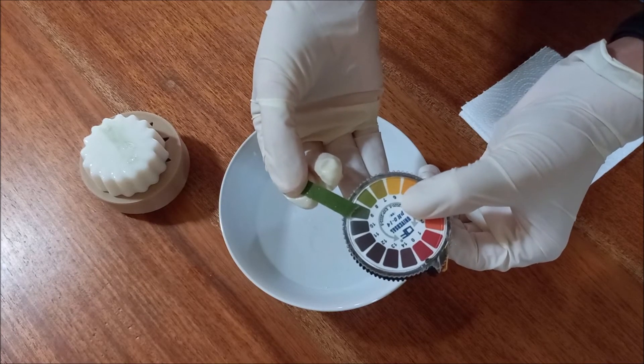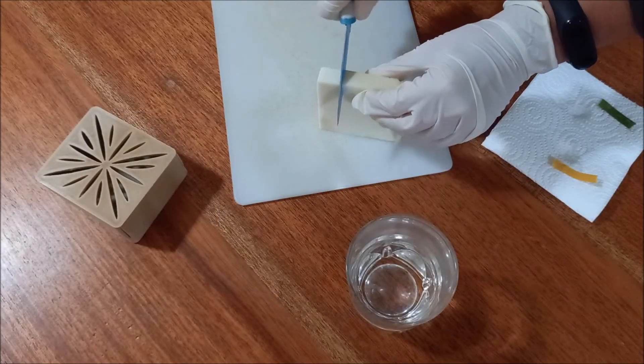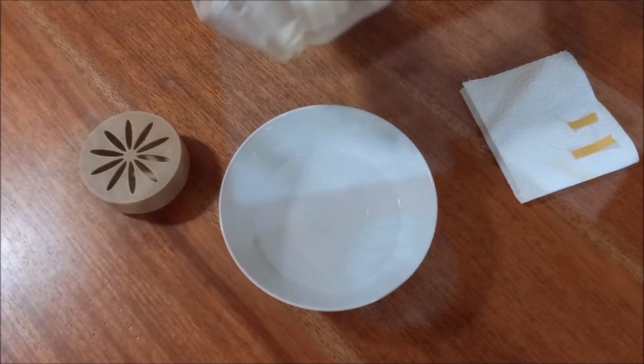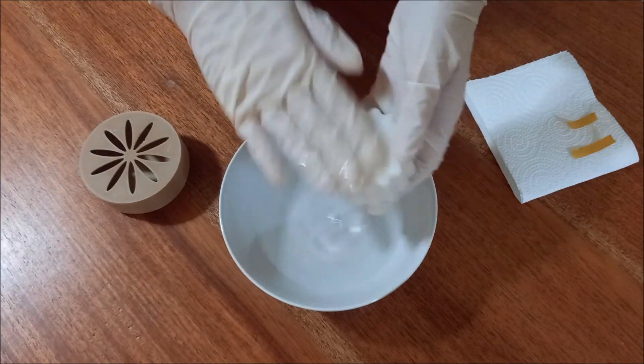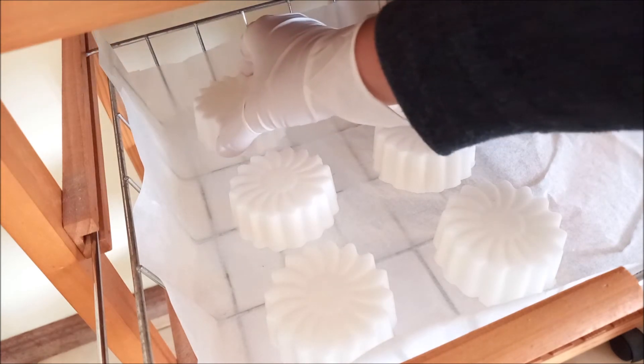The pH is between 8 and 9 and can also be used safely. Although the first method gives a more accurate result, the second method can be used if you don't want to cut the soap. If the soap is not within normal values, it should be left to cure longer and then retested.